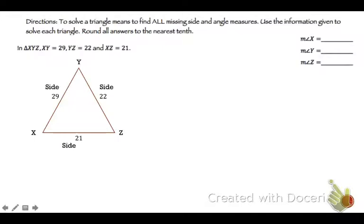This is a side, side, side triangle. So I am going to use law of cosines. Let's start with solving for X just because X was the first one that is on our list up in the right corner. So let's solve for X.